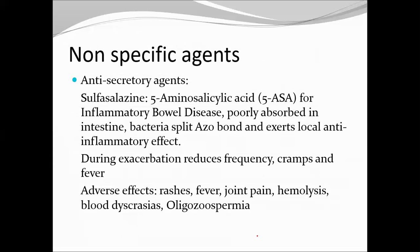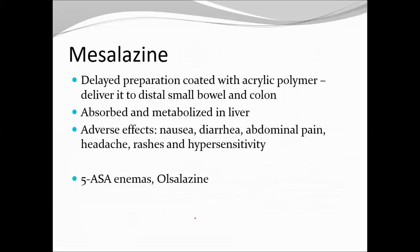Non-specific antisecretory agents are used for non-infective diarrhea. The first is sulfasalazine — we use 5-aminosalicylic acid (5-ASA) for inflammatory bowel disorder. It is poorly absorbed in the intestine; bacteria cleave the azo bond and the liberated 5-ASA exerts a local anti-inflammatory effect. It is used during exacerbations, reduces frequency, cramps, and fever, but can cause rashes, fever, joint pain, hemolysis, oligospermia, and reduced sperm motility.